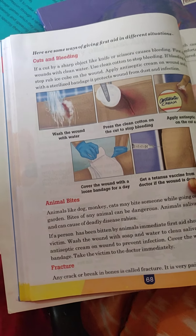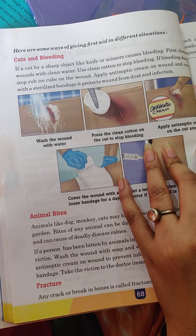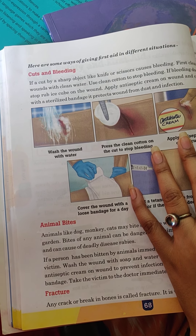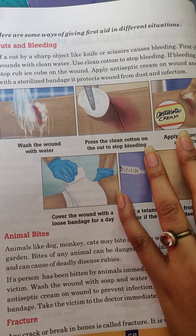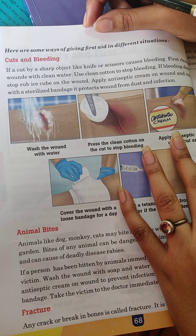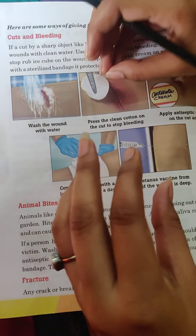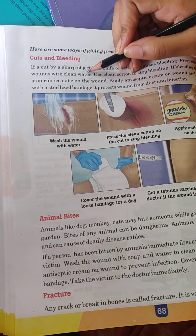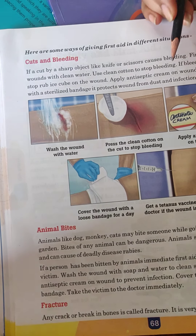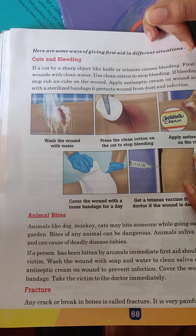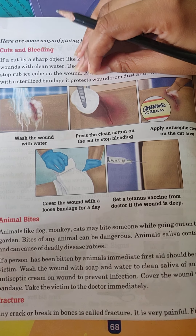Cut and bleeding: if cut by a sharp object like a knife or scissors, it causes bleeding. First, clean the wound with clean water. Use clean cotton to stop the bleeding. If bleeding does not stop, rub ice cubes on the wound. Apply antiseptic cream such as Betadine over the wound. Then cover it with a sterilized bandage to protect the wound from dust and infection.